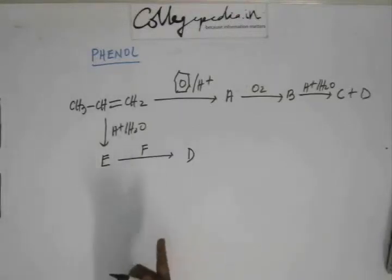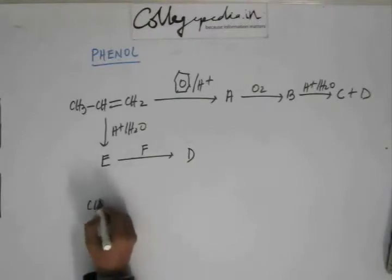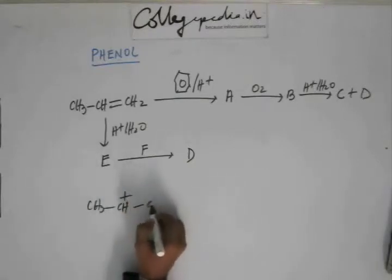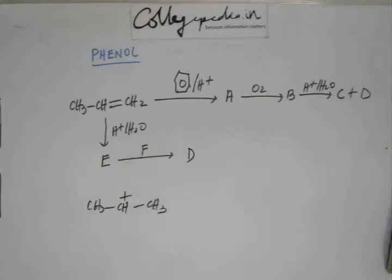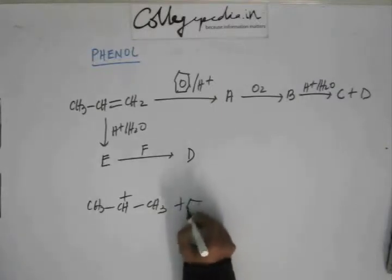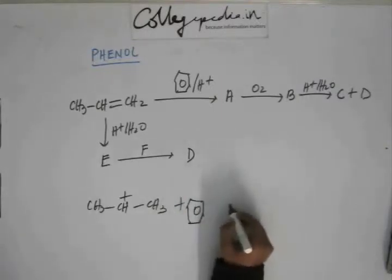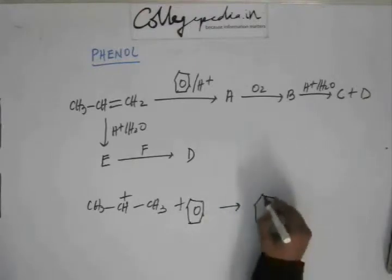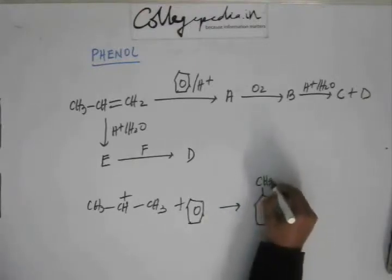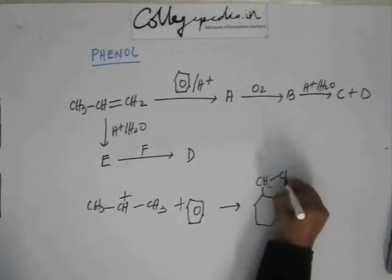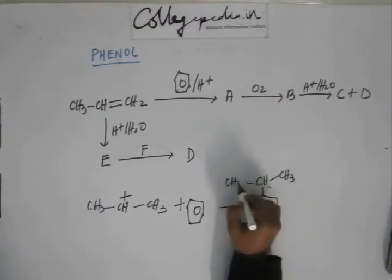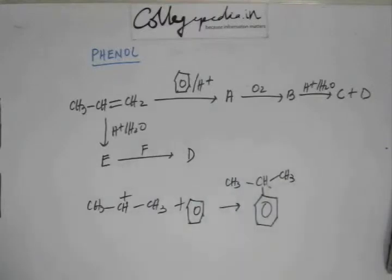So what will happen is that H+ will come to this propene to ask for electron. A carbon is going to give its electron and a carbocation is going to be formed like this. And this carbocation is going to go and ask for electron to the benzene ring. And benzene ring is going to give its electron. And after due reaction you are going to get isopropylbenzene. This is what A will be.